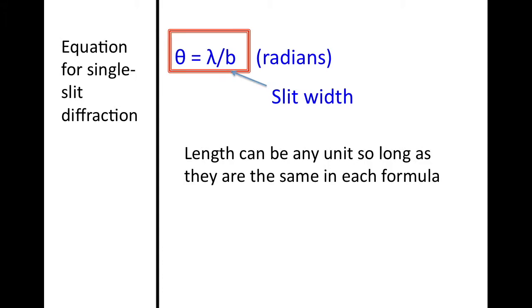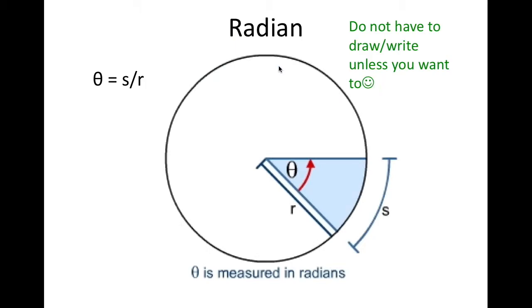Now the question is how did they get this equation? Here is a flashback to our circular motion unit. Remember how θ is equal to the angle subtended right here divided by the radius. So here we have θ equals s divided by r. This information is going to come in play in just a second.